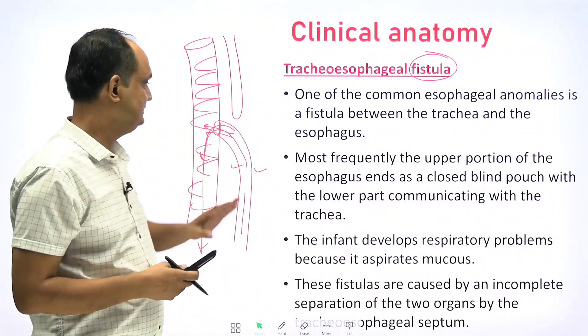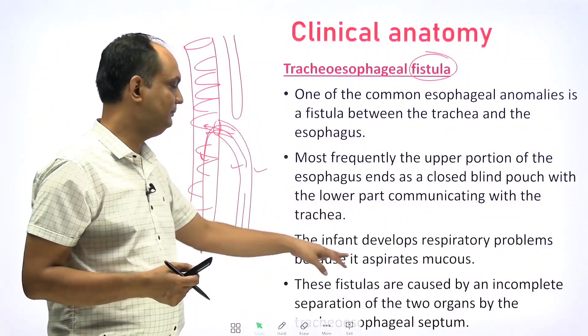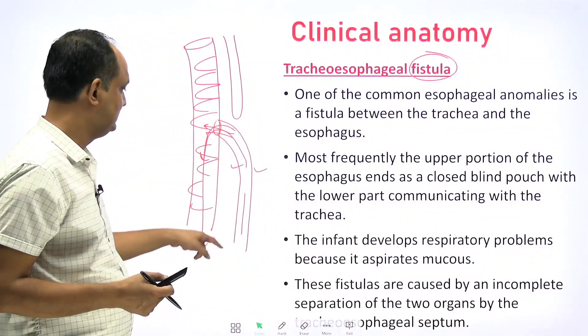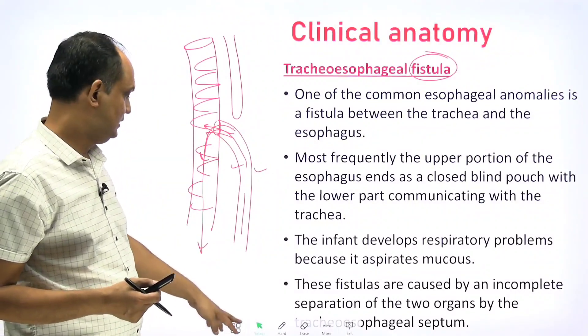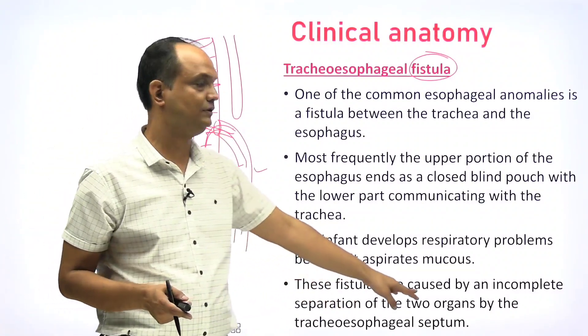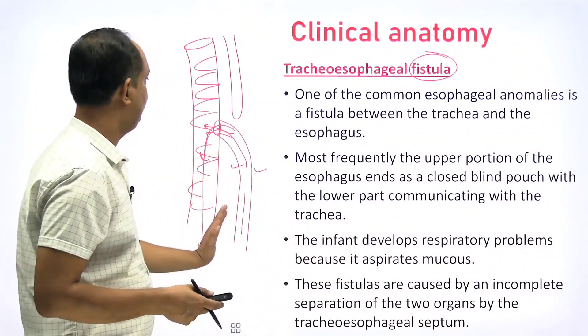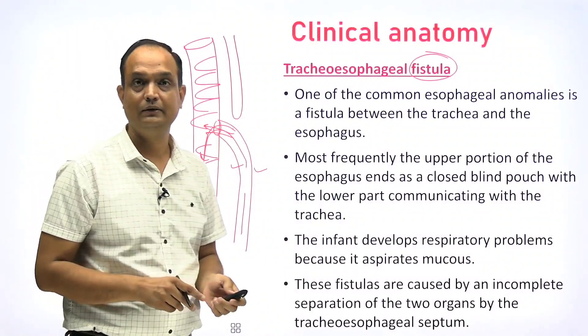This is the most common variant, though different variants of tracheoesophageal fistula exist. The infant develops respiratory problems because of aspiration of mucus into the trachea and lungs. These fistulas are caused by incomplete separation of the two tubes — if the septum develops properly, this problem does not occur.